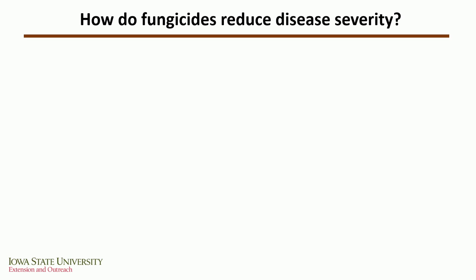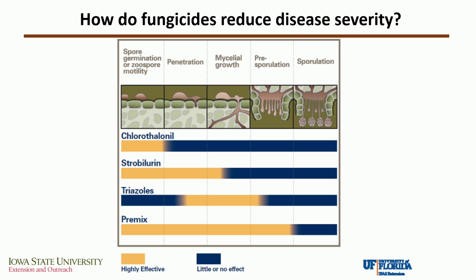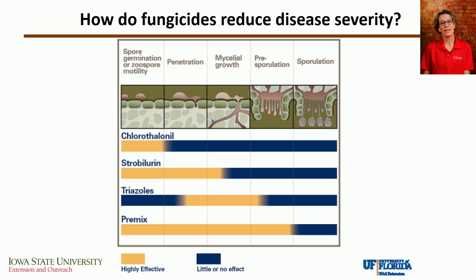A diagram from the University of Florida illustrates how fungicides reduce disease severity. It shows the disease cycle and where each fungicide class acts: the strobilurin prevents germination of the spores, whereas the triazole prevents infection and early mycelial growth into the mesophyll of the leaf. Spores can still germinate with tiny germ tubes, but they're unable to colonize the leaf.